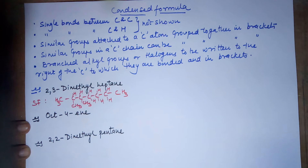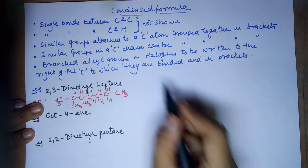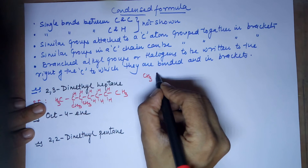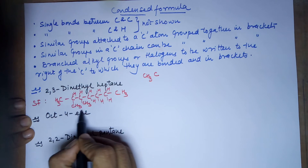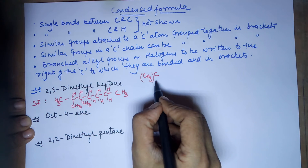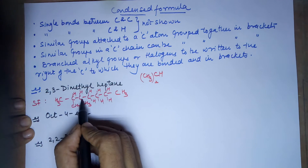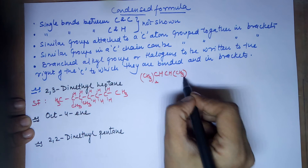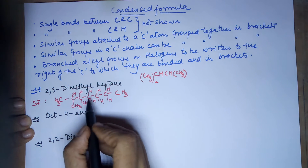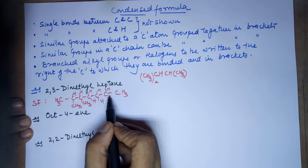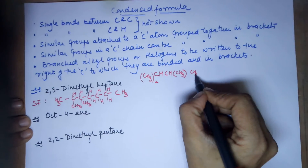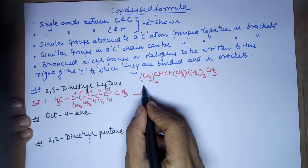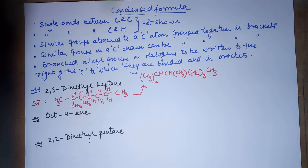Now if I want the condensed formula of this structure, it would be: CH3, then I have a C — single bonds are not to be shown. This CH3 and this CH3 are on the same carbon, so I can group them as (CH3)2, then a CH. Next carbon has a CH with a CH3 group, written in brackets to the right of the carbon. Then you have CH2 CH2 CH2 — three CH2s in a row — so these groups can be written together as (CH2)3, and finally a CH3.